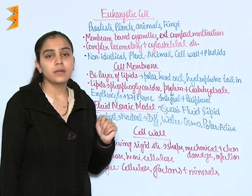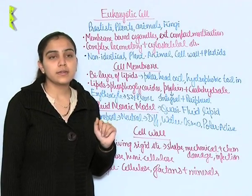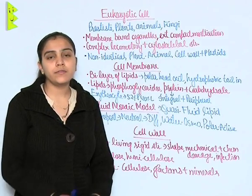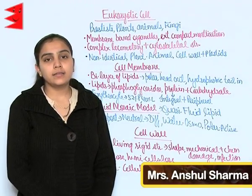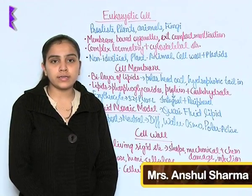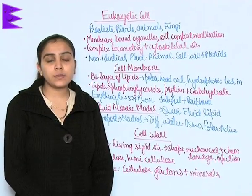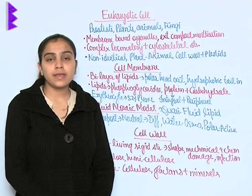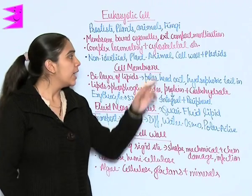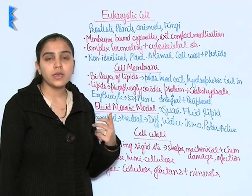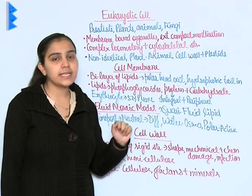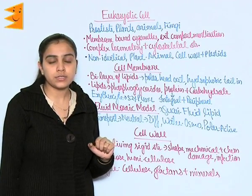Eukaryotic cell. Protists, plants, animals and fungi have eukaryotic cells. These cells have membrane-bound organelles in them and that's why they show extensive compartmentalization. These cells also have complex locomotory as well as cytoskeletal structures.